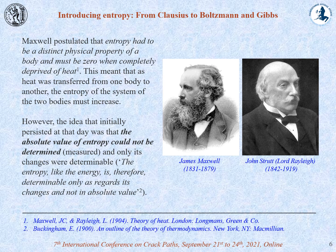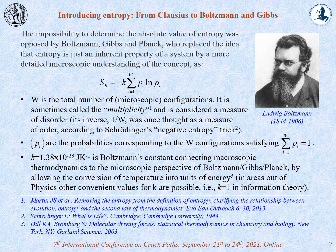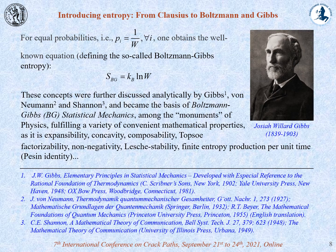It was then Maxwell who stated that entropy is a distinct physical property of a body and must be zero when completely deprived of heat. Therefore, as heat is transferred from one body to another, the entropy of the system must increase. In any case, the idea of that day was that the absolute value of entropy could not be determined. Soon afterwards, this idea was opposed by Boltzmann, Gibbs, and Planck, who introduced the microscopic understanding of the concept and their respective fundamental equation for entropy, where W is the total number of microscopic configurations, PI are the probabilities corresponding to these configurations, and K is the constant connecting macroscopic to the microscopic perspective. For equal probabilities, a more familiar form of the entropy equation is obtained that defines what is called Boltzmann-Gibbs entropy.